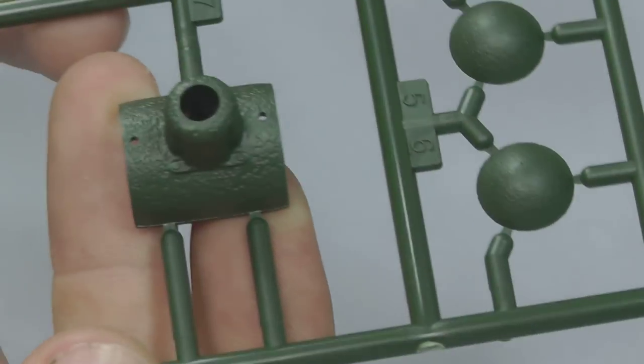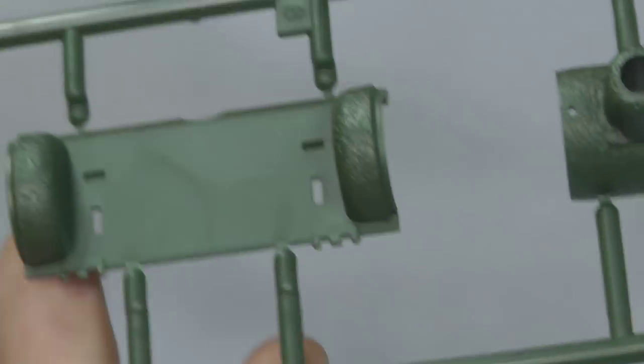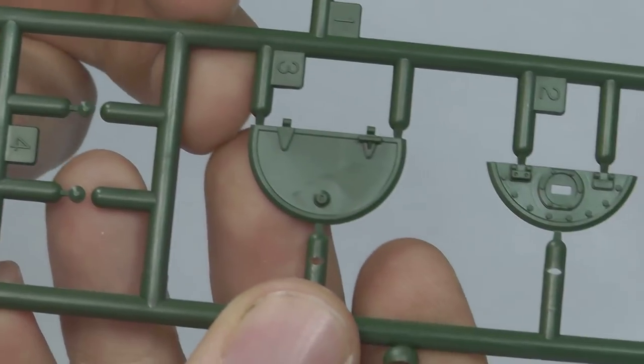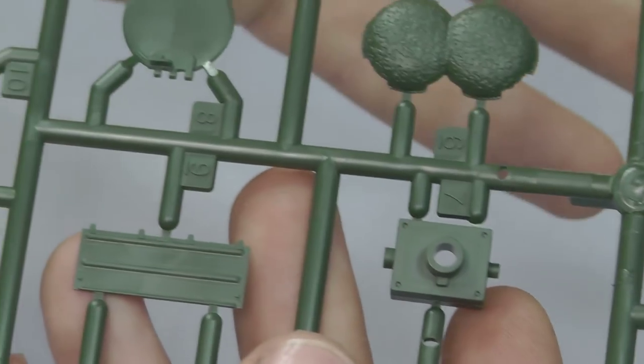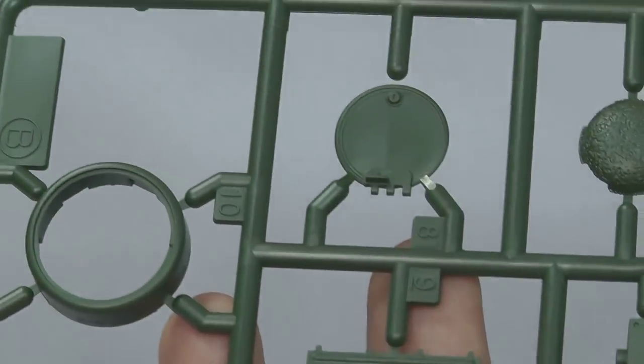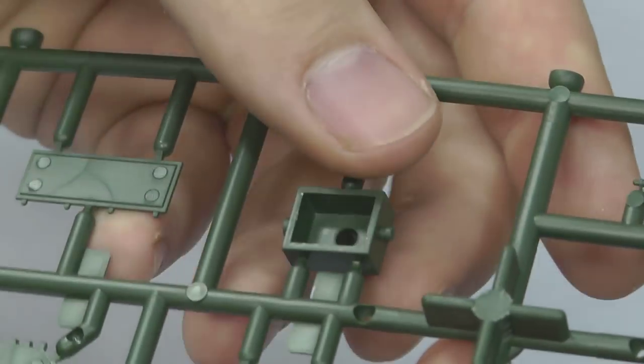The gun mantlets have got all that lovely texture going on in there. Very crisp. No flash at all going on with this kit, which is rather cool. We've got some sort of detailed pieces here. We have some hatches, as you can see. The surface detail is looking just as good as everywhere else on the kit.